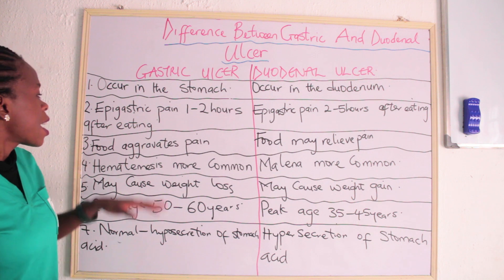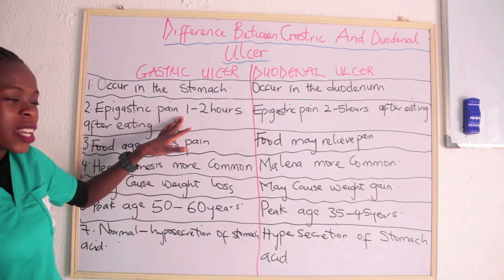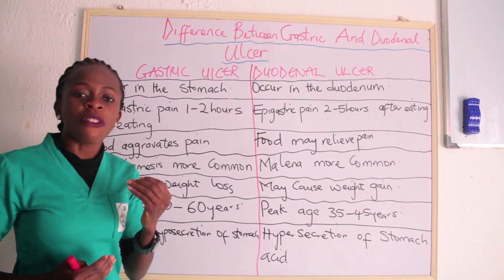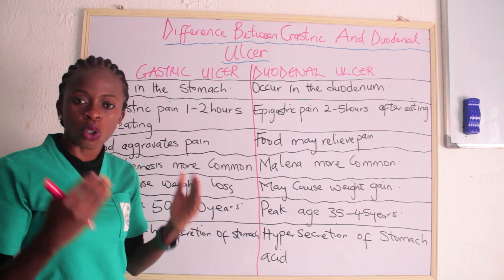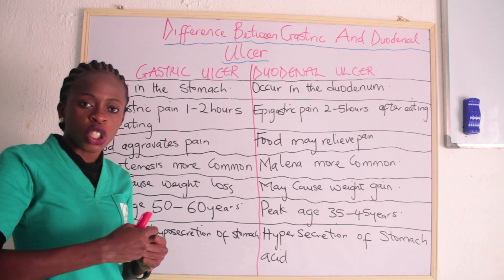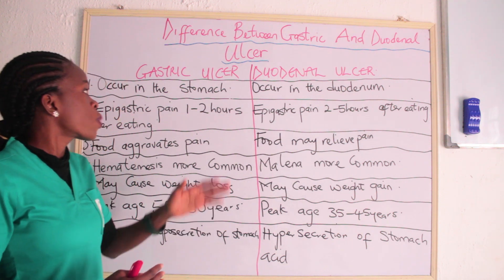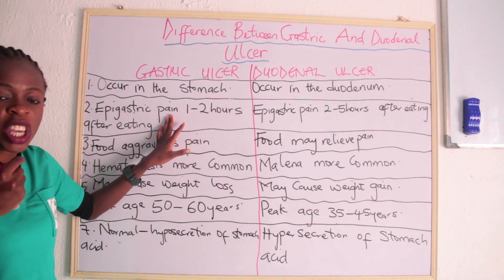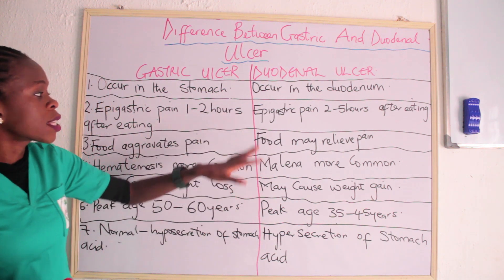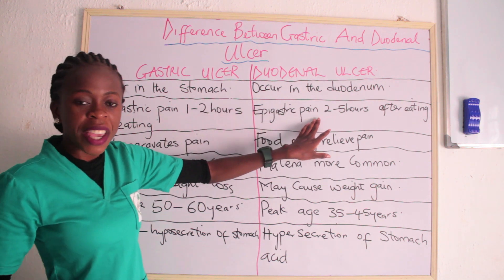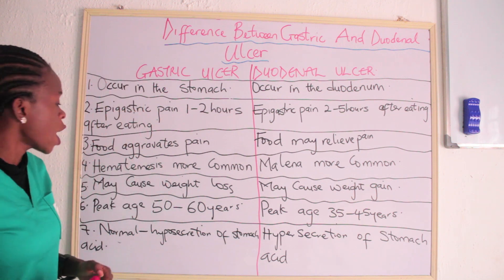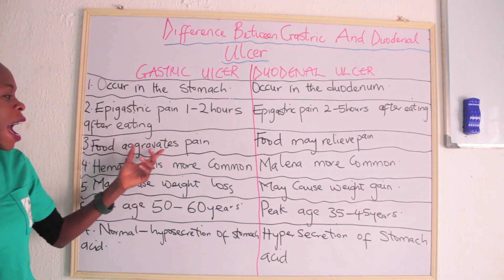The second difference is the timing of epigastric pain. If you have watched our video on the anatomy and physiology of the stomach, you will know where the epigastric region is. People with gastric ulcer usually have epigastric pain 1–2 hours after a meal, while people with duodenal ulcer have epigastric pain 2–5 hours after eating.